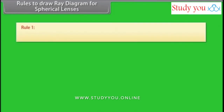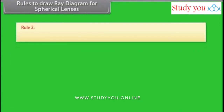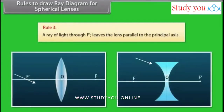Rules to draw ray diagrams for spherical lenses: Rule 1 — a ray of light through the optical centre O passes undeviated through the lens. Rule 2 — a ray of light parallel to the principal axis passes through F when it leaves the lens. Rule 3 — a ray of light through F' leaves the lens parallel to the principal axis.